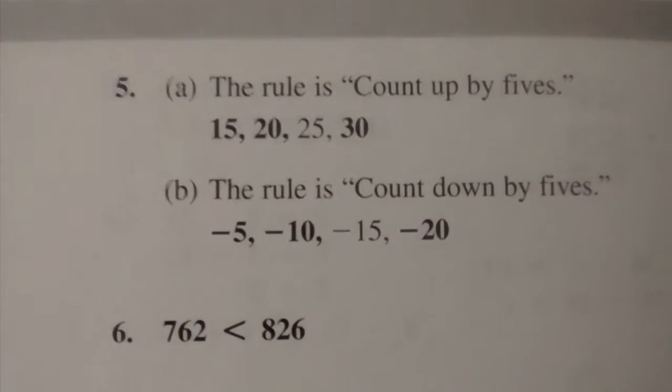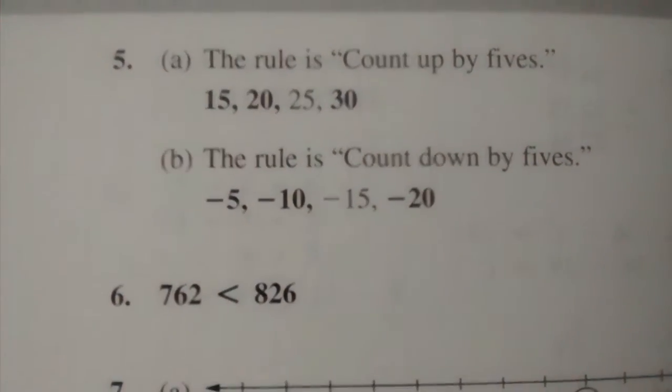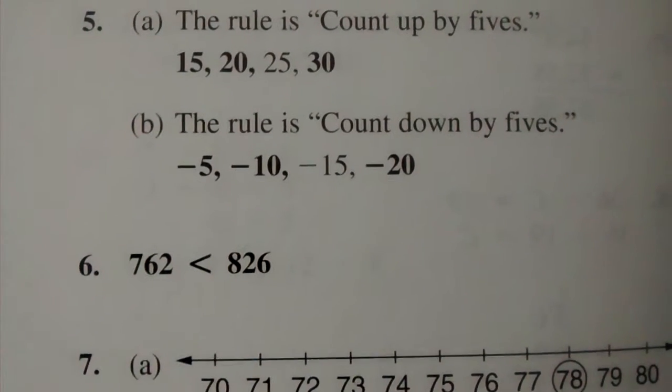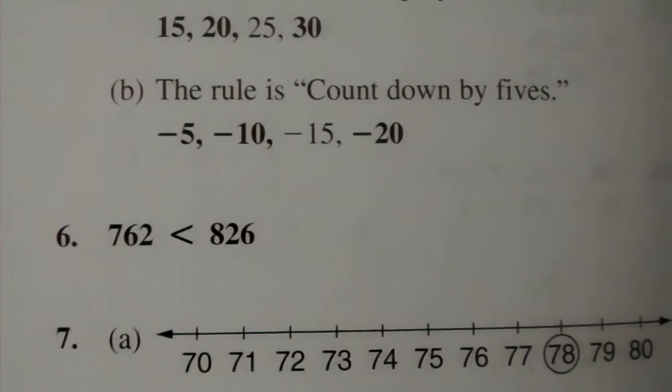Number 5: 15, 20, 25, 30. B: negative 5, negative 10, negative 15, negative 20.